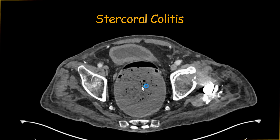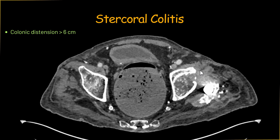To call it stercoral colitis, you must know how to differentiate it from simple fecal impaction. First, the diameter of the involved segment should be more than 6 centimeters. This feature can be seen in both fecal impaction and stercoral colitis; however, even simple fecal impaction with this diameter has a very high chance of developing into stercoral colitis, so it must always be flagged. In this patient, the diameter of the rectum is more than 9 centimeters — so we already have one red flag.